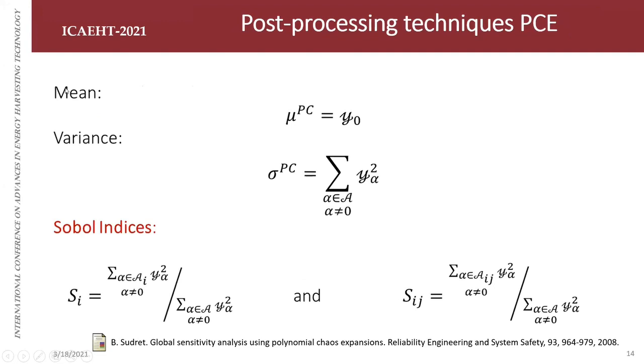Without adding time and just using the coefficients, we can calculate the statistical moments. The mean is the first coefficient, the variance is all coefficients squared. Actually, I don't consider the first coefficient because it's the mean.